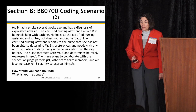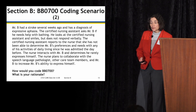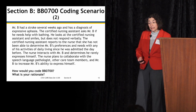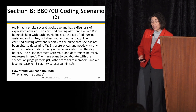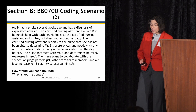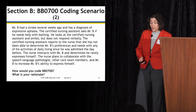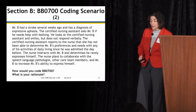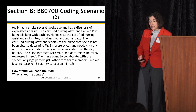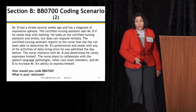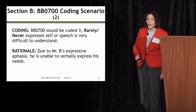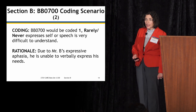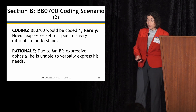For BB0700: Mr. B had a stroke several weeks ago and has a diagnosis of expressive aphasia. The CNA asks Mr. B if he needs help with bathing; he looks at her and smiles but doesn't respond verbally. The CNA reports she's unable to determine Mr. B's preferences with any activities of daily living. The nurse determines he rarely expresses himself and plans to collaborate with the speech-language pathologist. The answer is code 1 — rarely or never expresses self — because Mr. B's expressive aphasia prevents him from verbally expressing his needs.